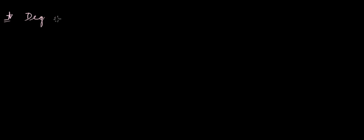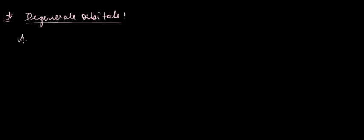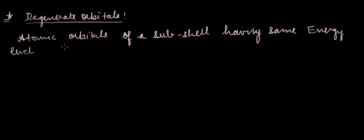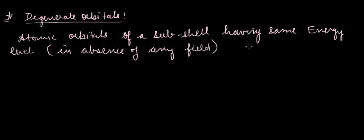Let's continue on the theory of quantum numbers. Degenerate orbitals are atomic orbitals of a subshell having the same energy level in the absence of any field — these are called degenerate orbitals.